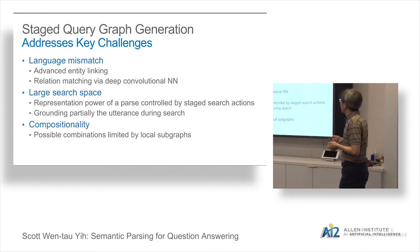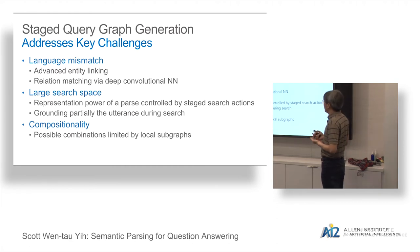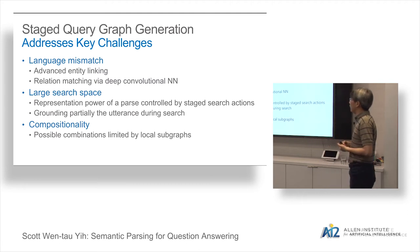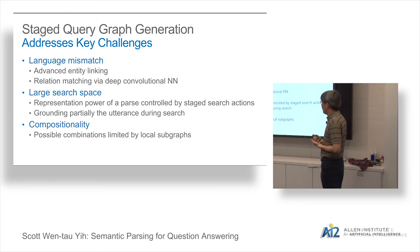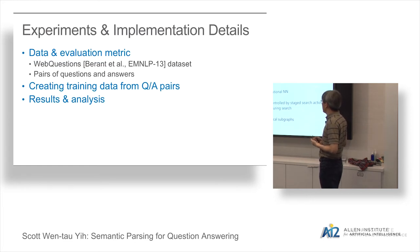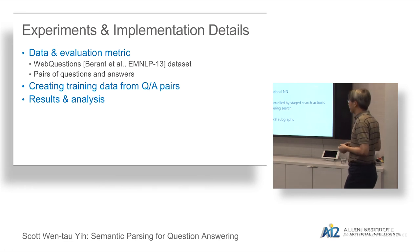Looking back at how this design addresses the key challenges: for language mismatch or the semantic matching problem, we use a high-quality entity linking system, which was surprisingly novel at the time. For relation matching, we use a deep neural network — also new at the time. To deal with the large search space, we use various heuristics to reduce it, such as limiting the length of relations we consider and using the knowledge base early to shrink the number of candidates.